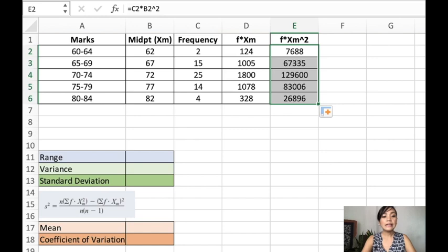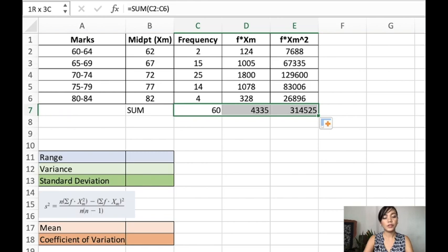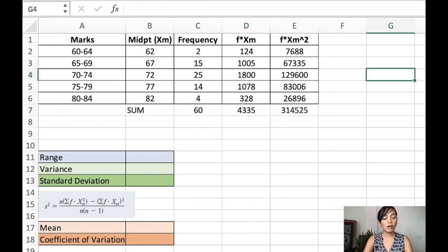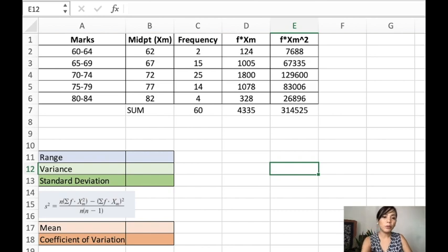Now, let's sum everything. So for the sum, let's sum the frequencies. Let's also sum the two. So we have the sum of the frequency, the frequency multiplied to the midpoint, and the frequency multiplied to the midpoint squared.